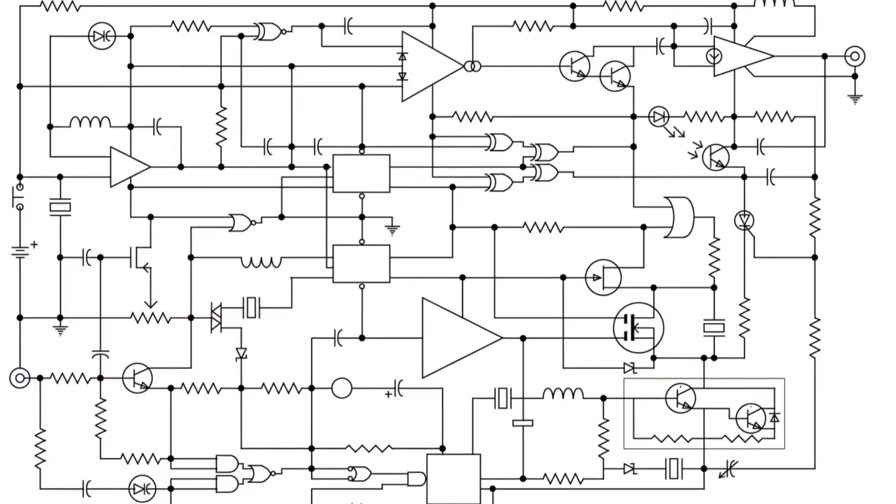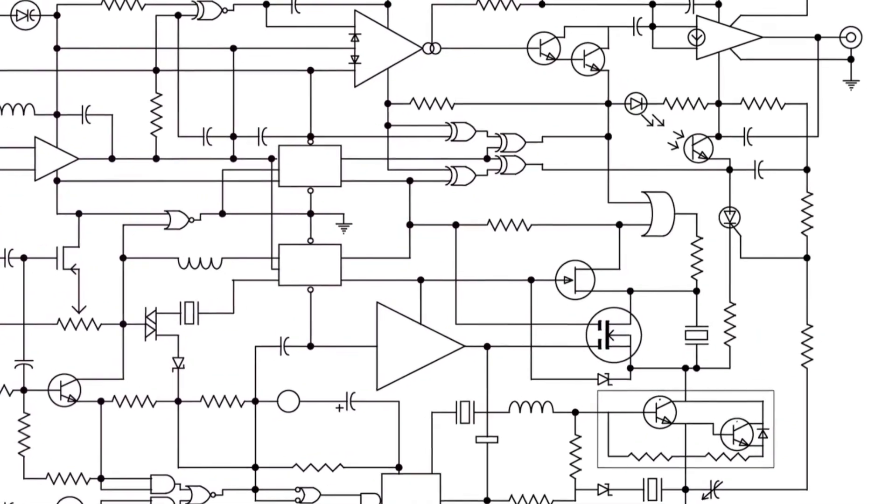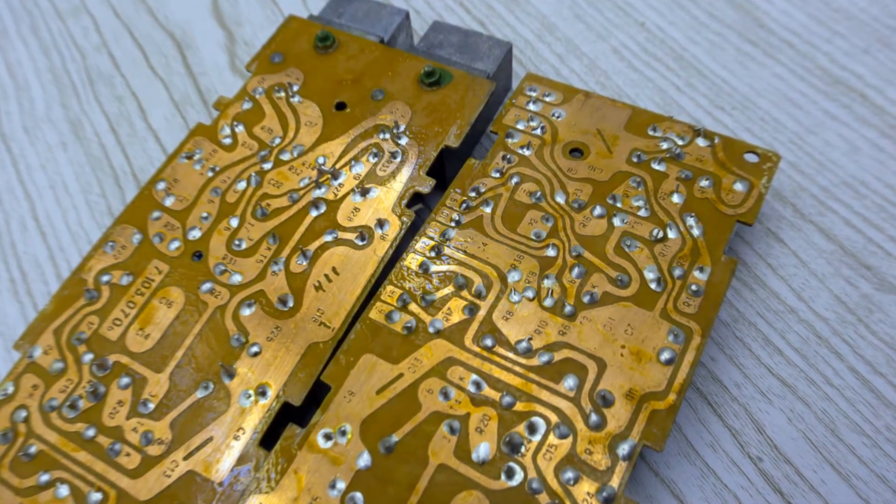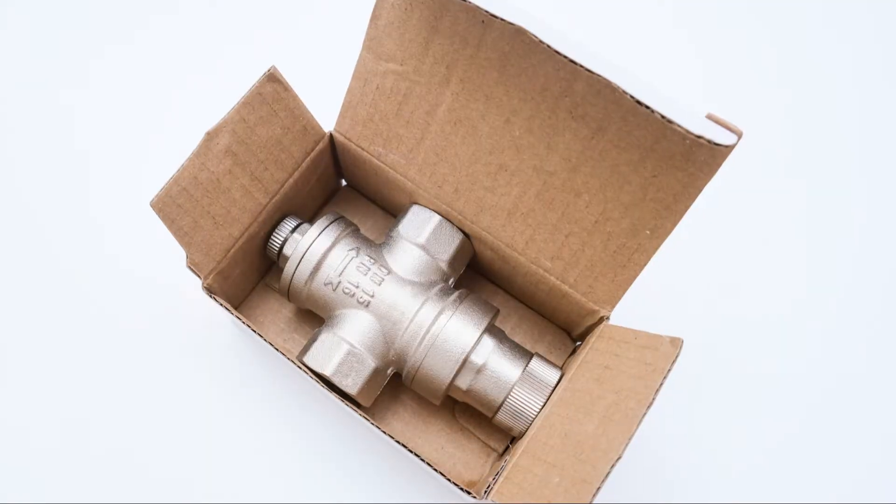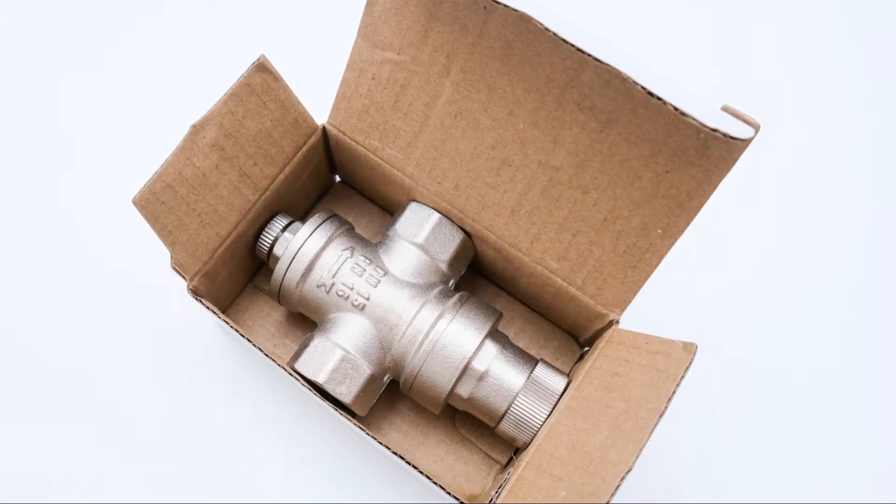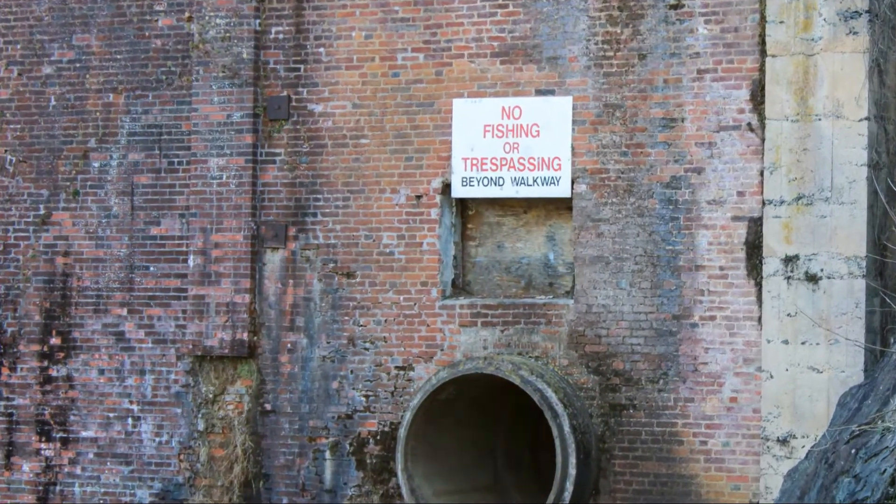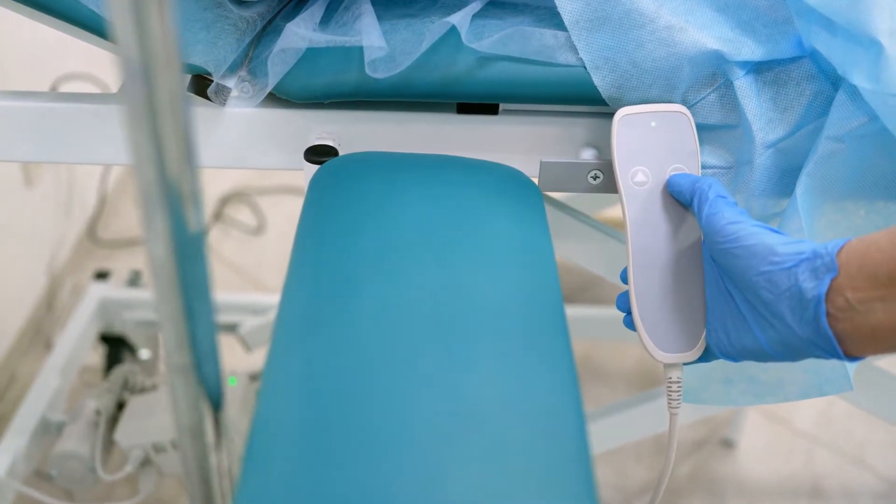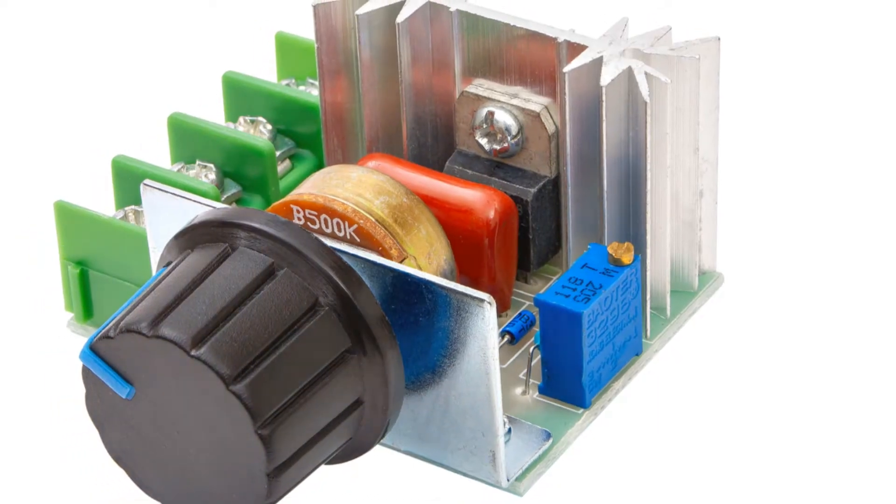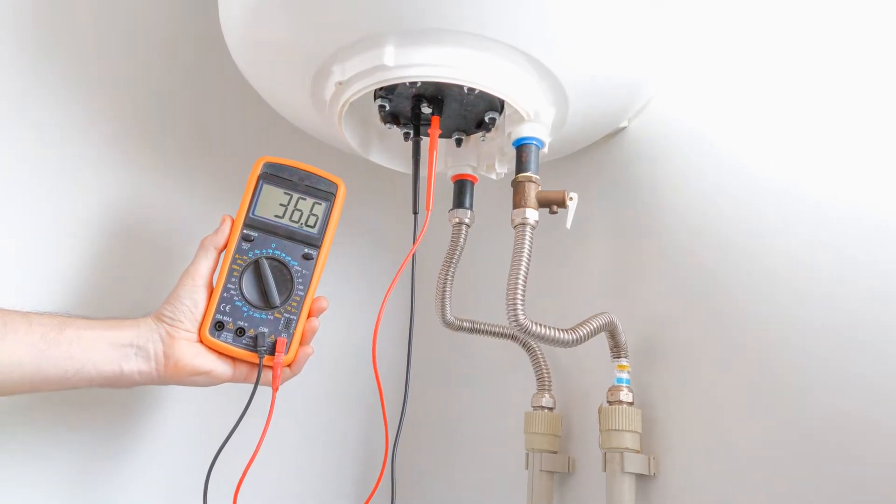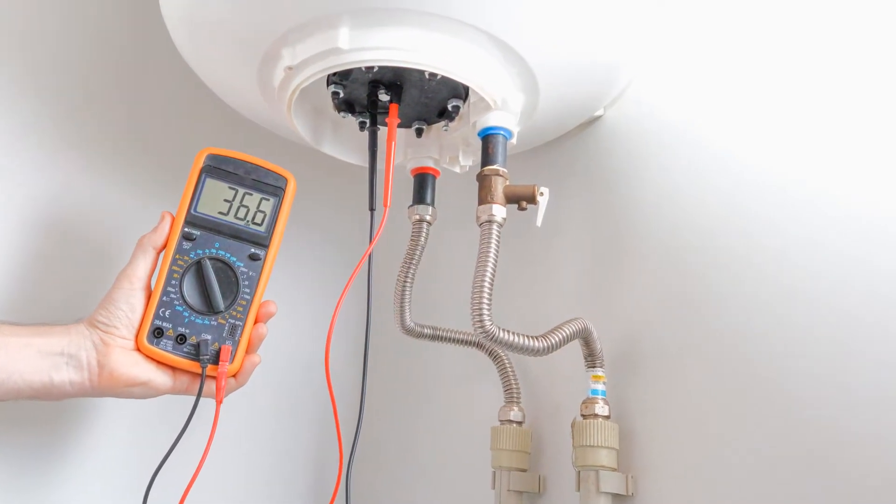But what do these readings mean? Voltage, current, and resistance are the fundamental properties of any electrical circuit. Voltage is like the pressure that pushes electrical charges through a conductor. Think of it as the force that drives the current. Imagine water flowing through a pipe - the water pressure is analogous to voltage.